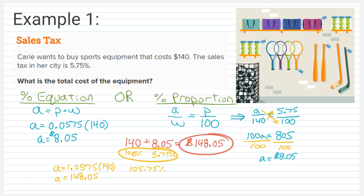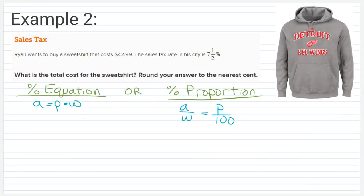All right. So let's go ahead and take a look at example two. Again, I have my equation and my proportion set up on this one. You can solve this in two steps or you can solve it in one. I'm going to do this both ways. So I'm going to use the equation where I'll actually solve it in one step and then I'll demonstrate using the proportion solving in two steps. So essentially we'll find out how much the actual taxes and then add that on to my initial cost. So Ryan wants to buy a sweatshirt that costs $42.99. The sales tax rate in his city is seven and a half percent. What is the total cost for the sweatshirt? We're going to round our answer to the nearest cent, which is to the nearest hundredths place.